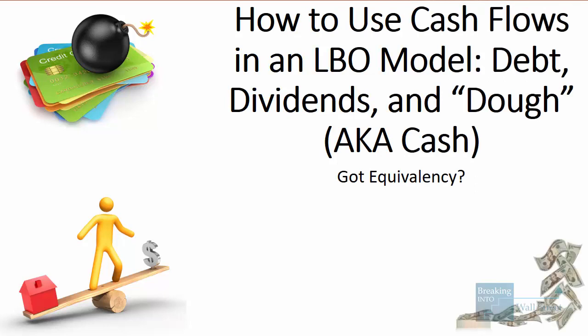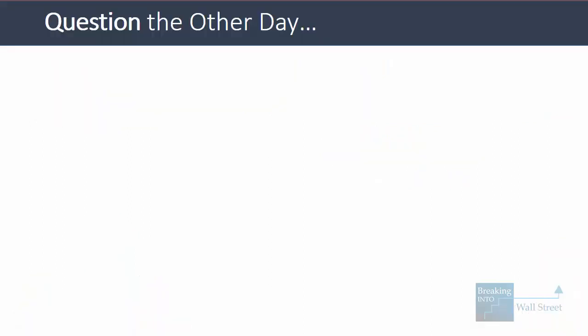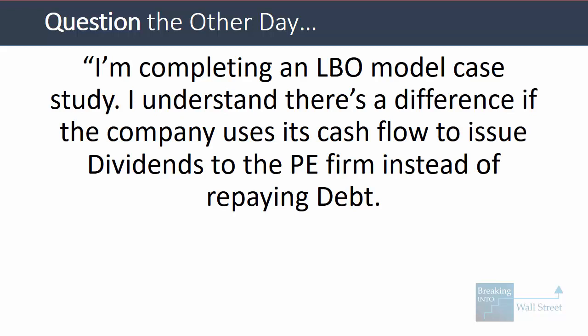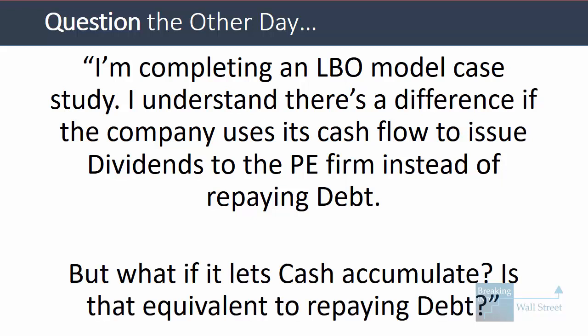Welcome to another tutorial video. This time we're going to be discussing how you might use cash flow and free cash flow in an LBO model and some of the different alternatives available when you're modeling a company. This tutorial is based on a question that came in: I'm completing an LBO model case study. I understand there's a difference if the company uses its cash flow to issue dividends to the PE firm instead of repaying debt — but what if it just lets cash accumulate? Is that equivalent to repaying debt?